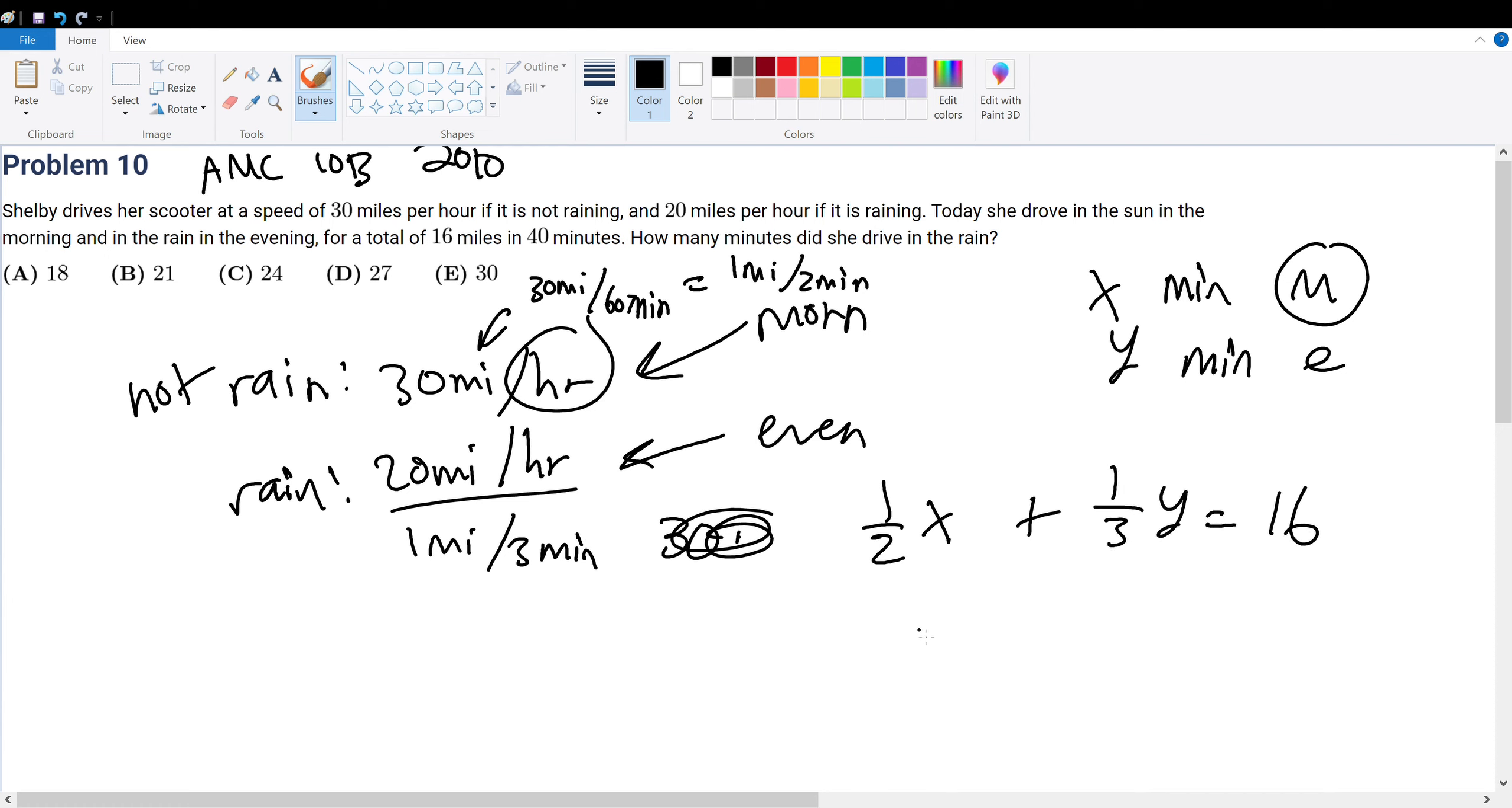And then if she drove for 40 minutes, since x and y are already in terms of minutes, that would be x plus y is equal to 40. Solve it, and we'll be done.